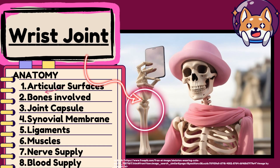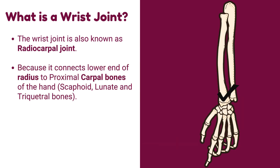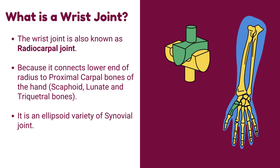In this video, we will talk about the anatomy of the wrist joint. The wrist joint is also known as the radiocarpal joint because it connects the lower end of the radius to the proximal carpal bones of the hand: scaphoid, lunate, and triquetral bones. It is an ellipsoid variety of synovial joint.